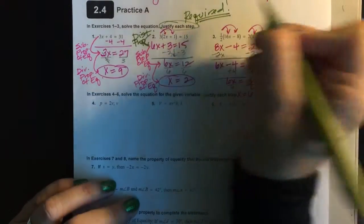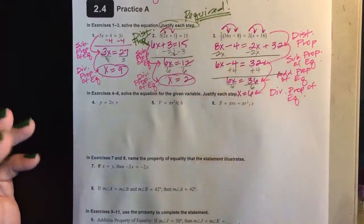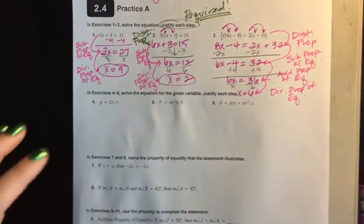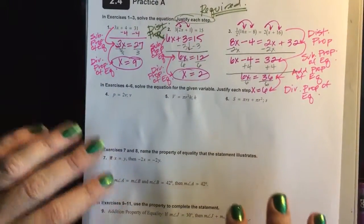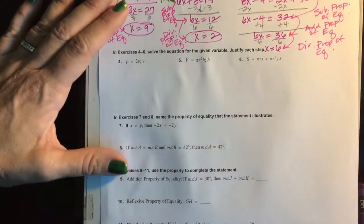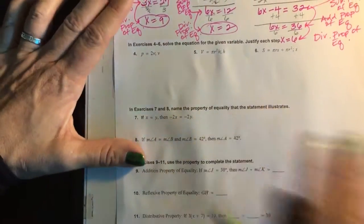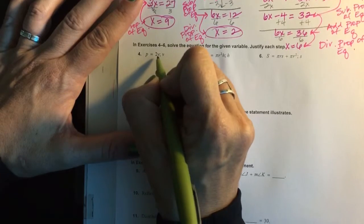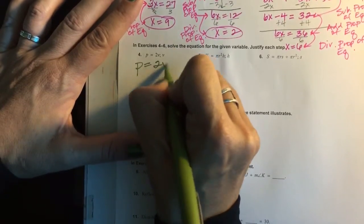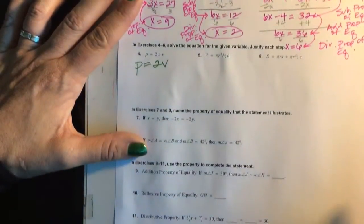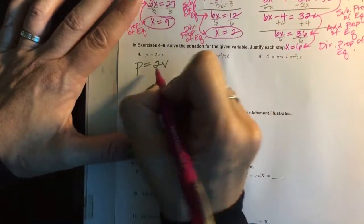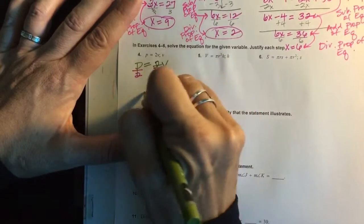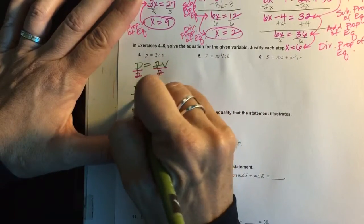On your test, more points are given to the justifications than the actual solving. We did four, five, and six — I believe we did these yesterday. Some of you had answers on your page because the work was on a piece of lined paper. Get it on this paper — all the steps, all the work. I have to solve for V, and if I'm going to solve for V, I just have to divide both sides by two, so V is equal to P over two.